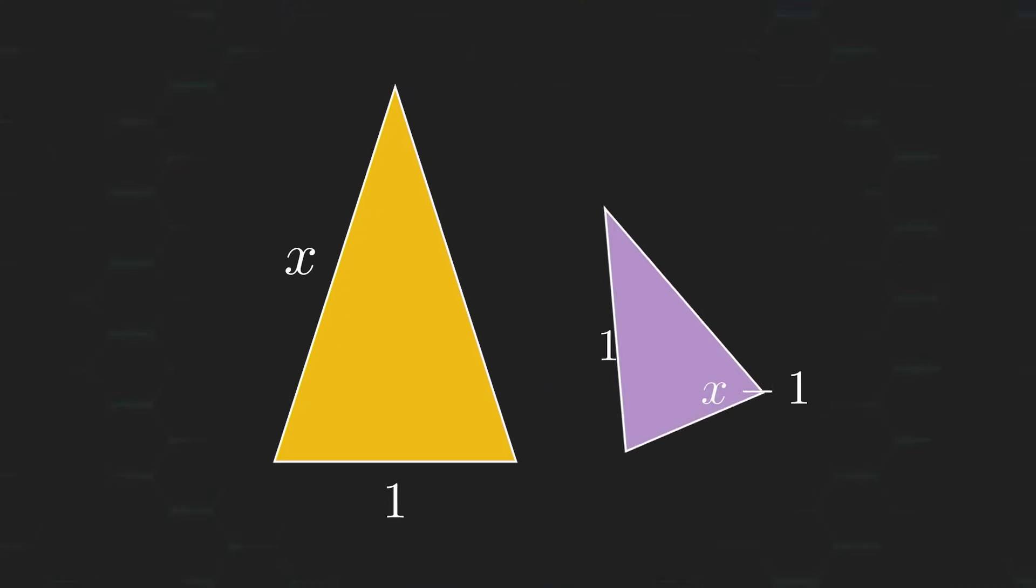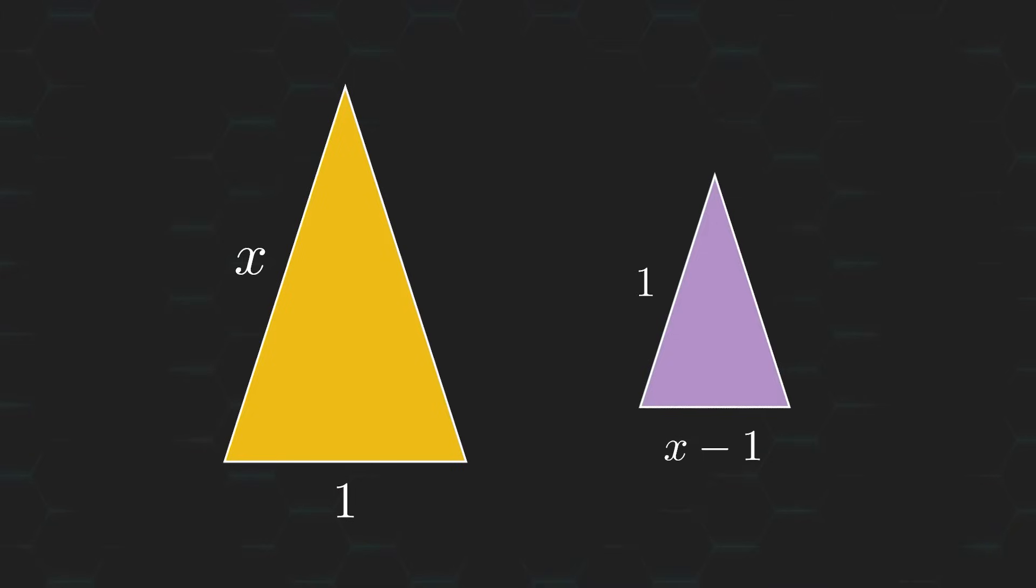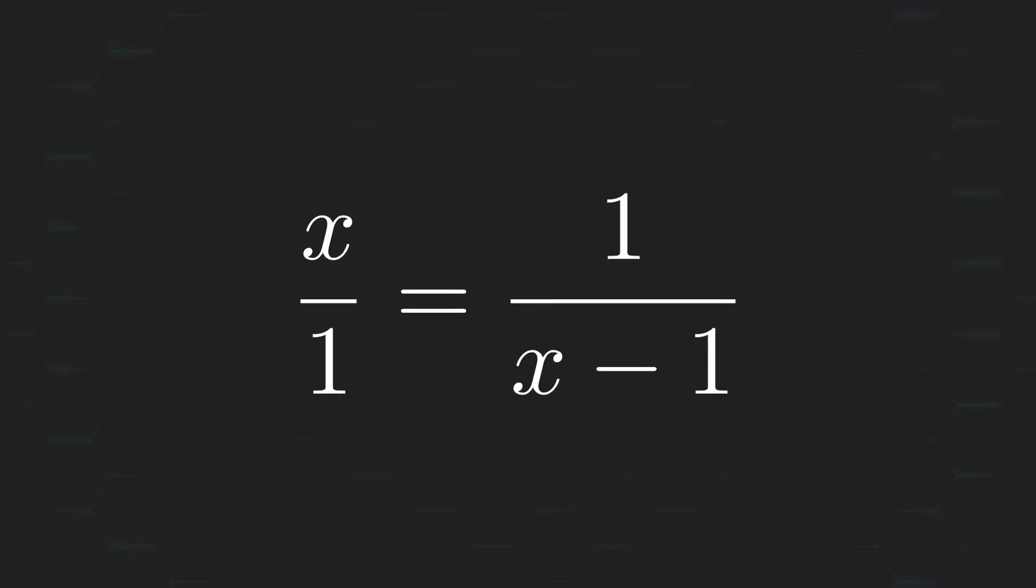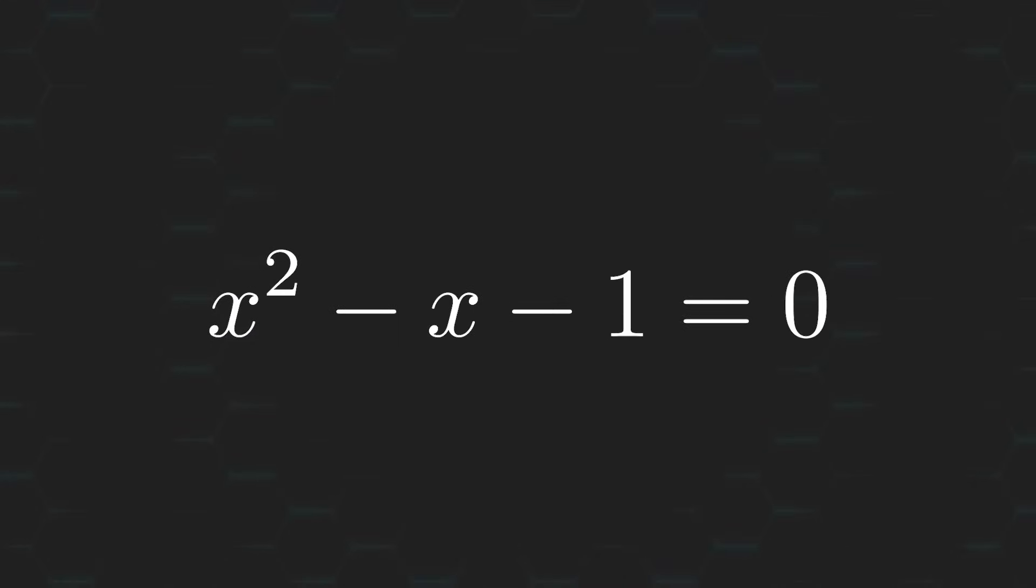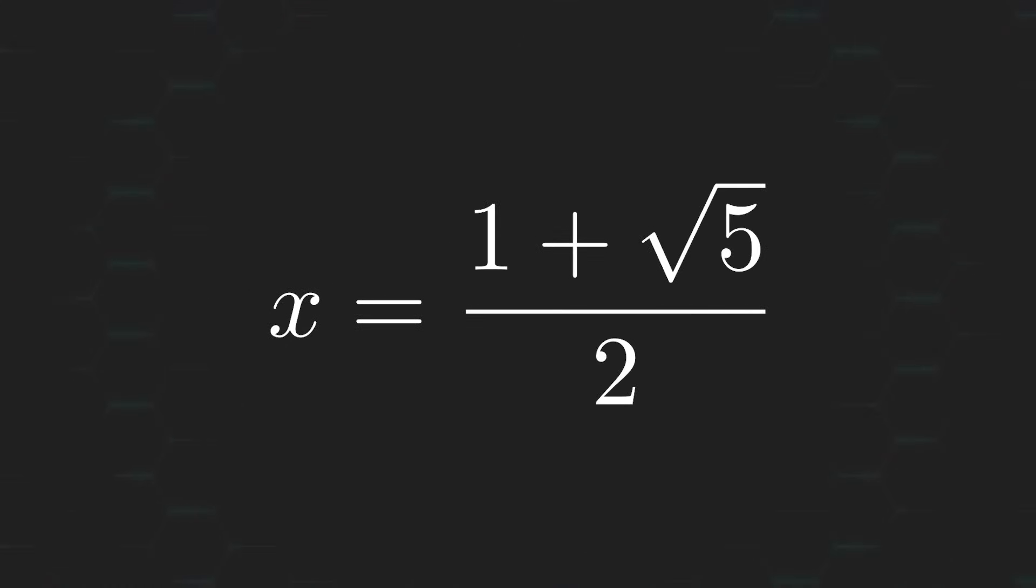Okay, cool. Now, something else you might have noticed is that these two triangles share the same angle measurements, and so they must be similar triangles, which means that the ratio of their side lengths must be equal. Or, in other words, x over 1 must be equal to 1 over x minus 1. And after some simplifying, we get the following equation. This equation only has one positive real root, and that's 1 plus root 5 over 2.